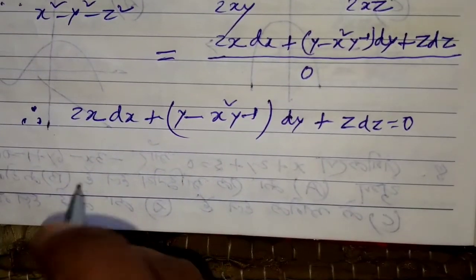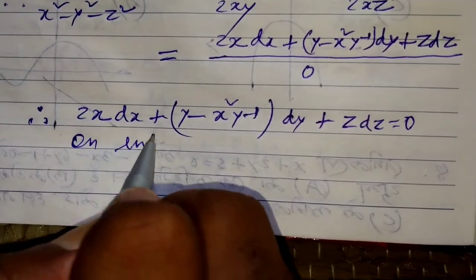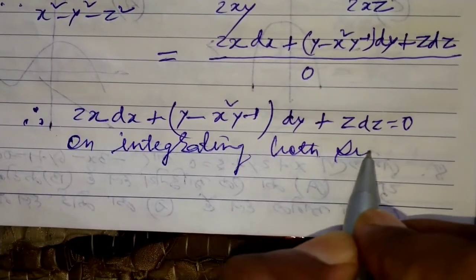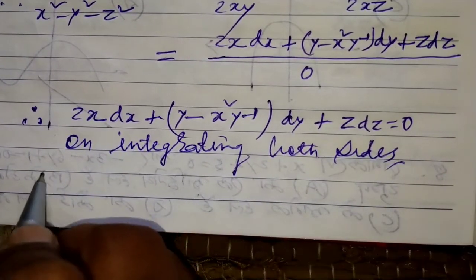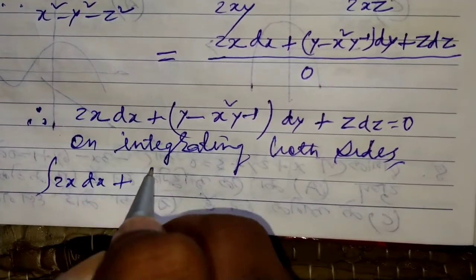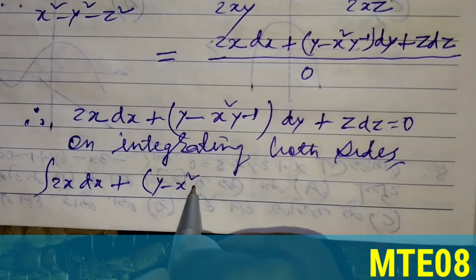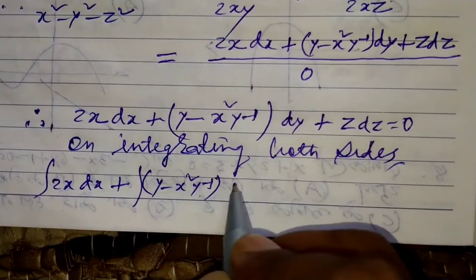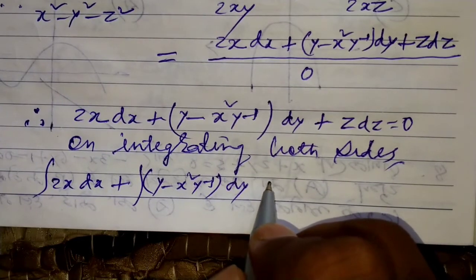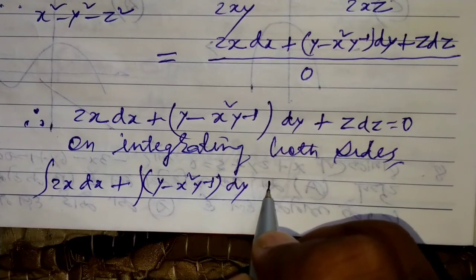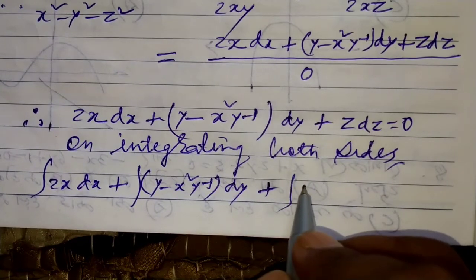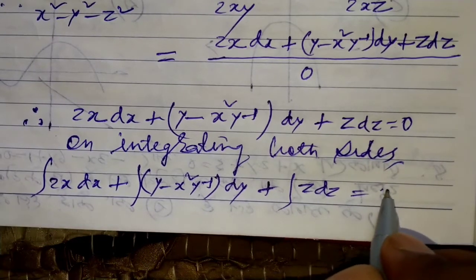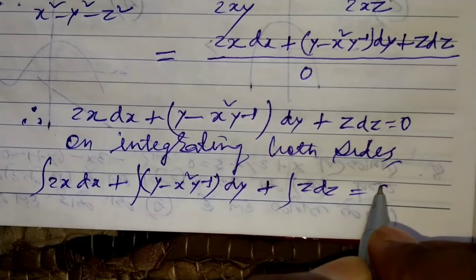Integration of 2xdx + (y - x²y⁻¹)dy + zdz is equal to a constant.